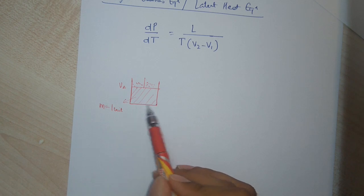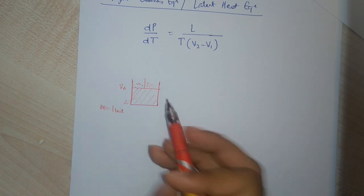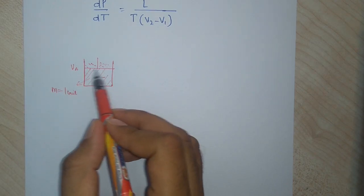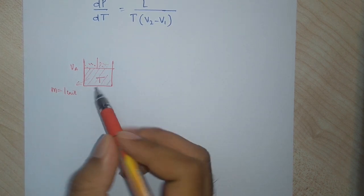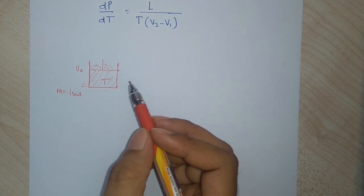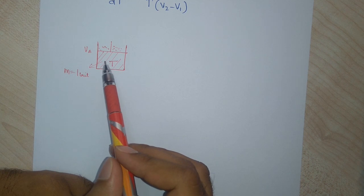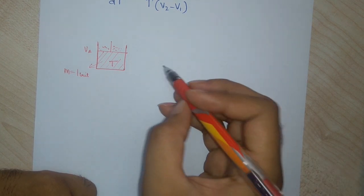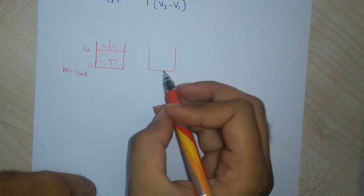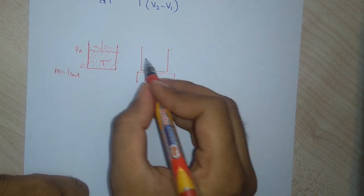This is my initial state of the working substance. It has some pressure, some volume VA, and is at some temperature T. Let us consider the pressure on this piston to be the saturation pressure — the pressure at which the liquid changes its phase from liquid state to vapor state. I want to vaporize this liquid by keeping both the pressure and temperature constant. To vaporize the liquid, I let it expand by applying some heat, keeping it on a thermal reservoir and inputting heat.